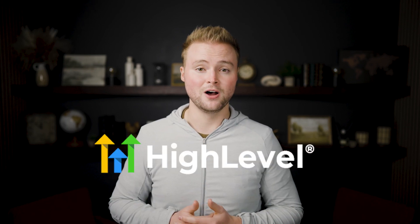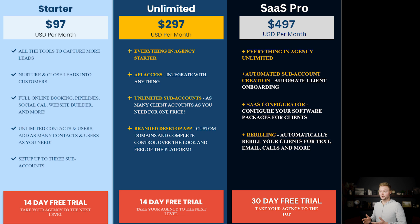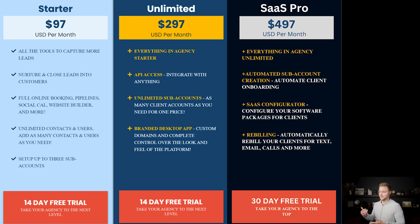In this video we're going to be talking about the three different subscription plans that Go High Level offers. Here are the three different subscription plans: we have our agency starter plan, agency unlimited, and then our SaaS pro plan.